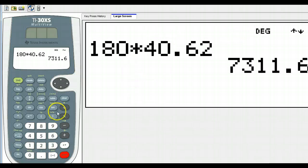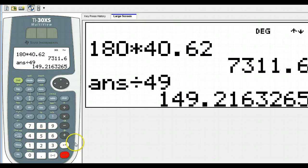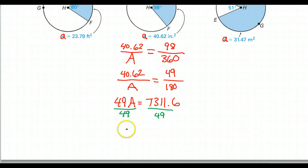So I'm back to the calculator. I can just go divided by 49. Okay, now I'm going to have to round. No choice about it. So I've got 149.22. Let's go ahead and round that up. So the area is 149.22.